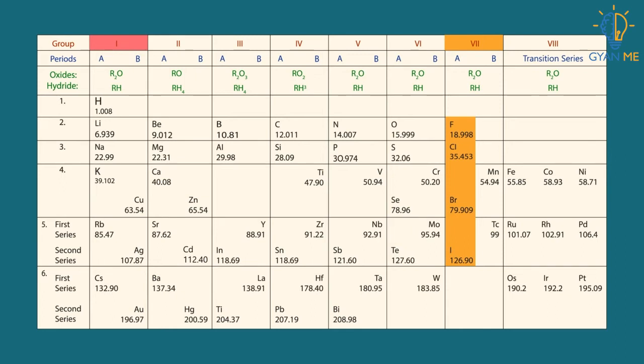Thus, Mendeleev's periodic table failed to explain whether to put hydrogen in the 1st group or 7th group. In fact, hydrogen still is a standalone in the periodic table.